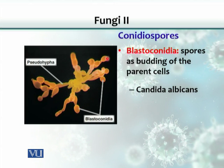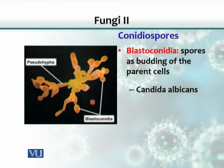Another conidia spore is called blastoconidia. Here, the spore is produced by budding off a cell from the mother cell. Candida albicans is basically a yeast, and when it multiplies inside the body, these yeast cells attach to each other in a way that typically looks like hyphae, but it is not.